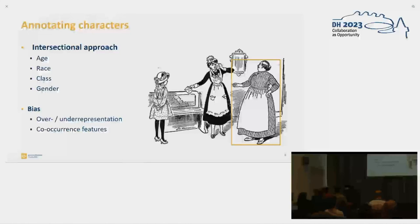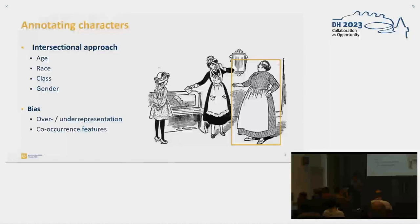In the first step of that research project, we're annotating the human characters in the illustrations of the children's literature, and we take an intersectional approach. So we put bounding boxes around the characters and then we annotate them for age, race, class, and gender. Bias is operationalized as an over- or under-representation, so if certain features co-occur more frequently than others, you could say that there's a certain type of bias.